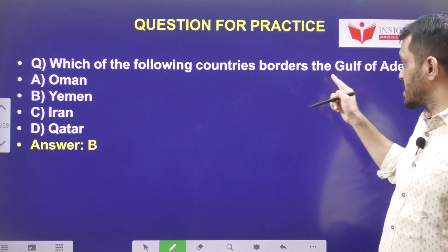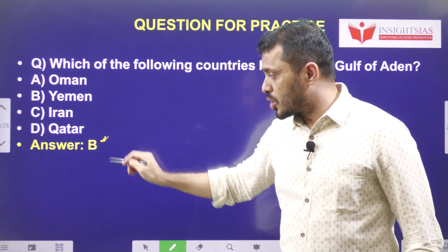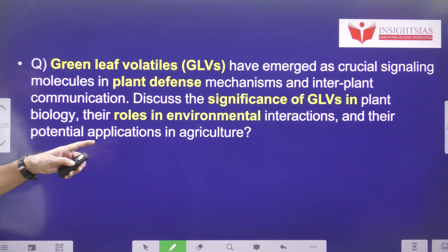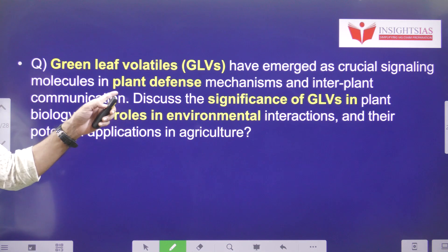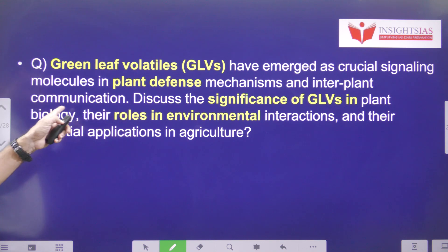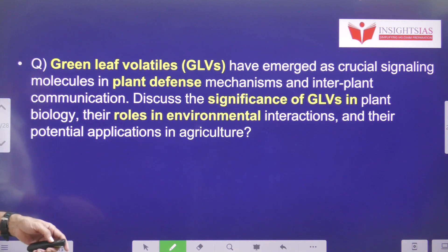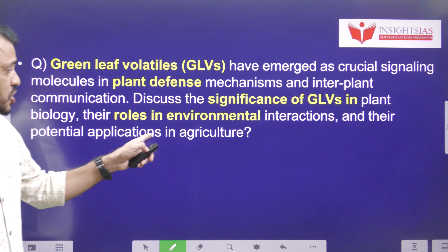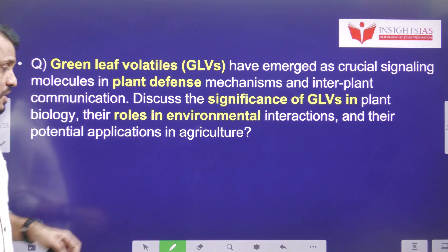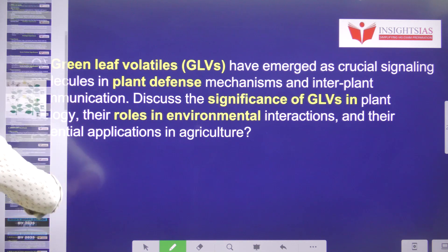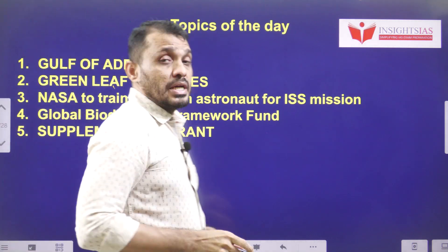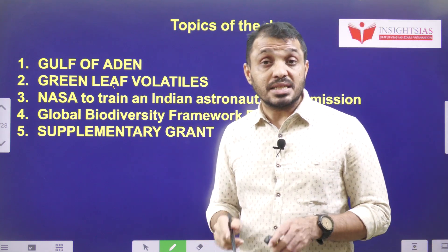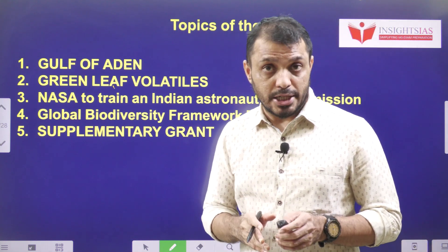MCQ: Which of the following countries borders the Gulf of Aden? Today's main question: Green leaf volatiles have emerged as crucial signaling molecules in plant defense mechanisms and interplant communication. Discuss the significance of green leaf volatiles in plant biology, their role in environmental interactions, and their potential applications in agriculture. This concludes today's current issues video covering these five topics.